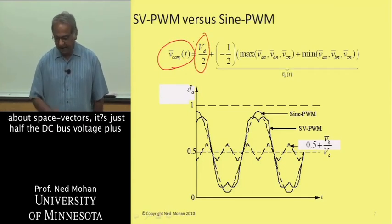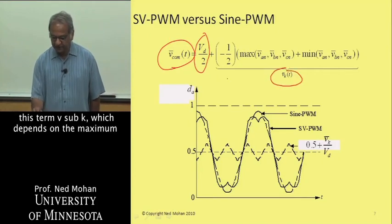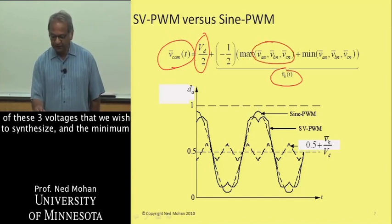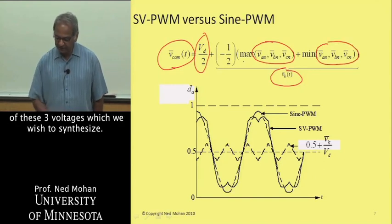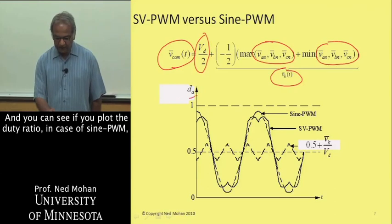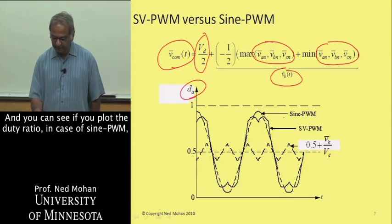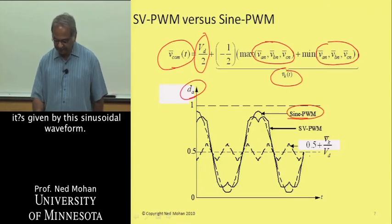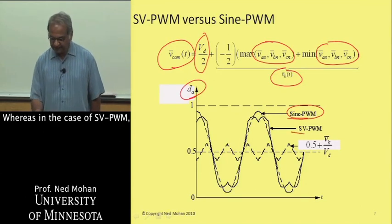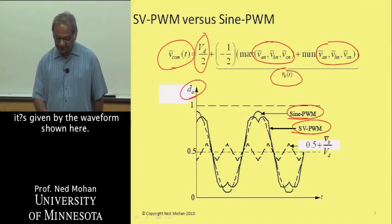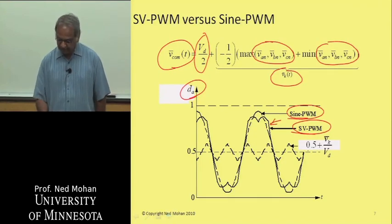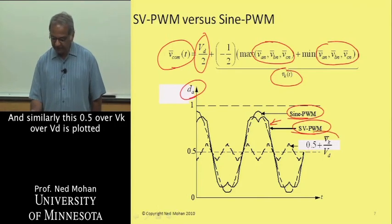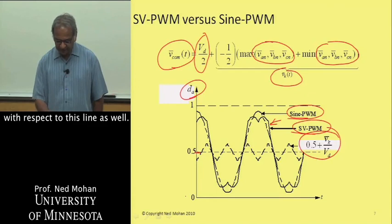V sub K depends on the maximum of these three voltages that we wish to synthesize and the minimum of these three voltages. You can see if you plot the duty ratio in case of sine PWM, it's given by this sinusoidal waveform, whereas in case of SVPWM it's given by the waveform shown here. Similarly, 0.5 plus VK/VD is plotted with respect to this line as well.